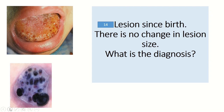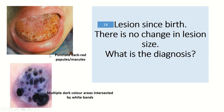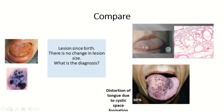Question 14: Lesion since birth with no change in size. There are dark red papules and macules in the clinical view, and on dermoscopy, multiple dark color areas intersected by white bands — indicative of angiokeratoma. If the color of the lesions were red instead of dark, the diagnosis based on this dermoscopy image would be Bowen's syndrome.